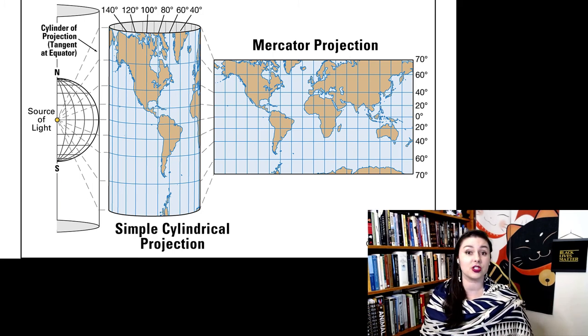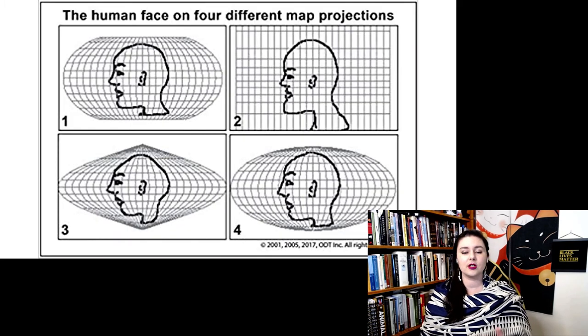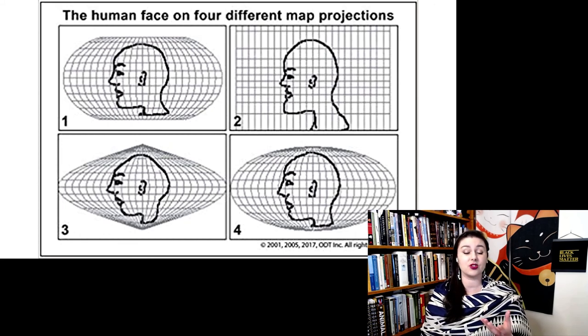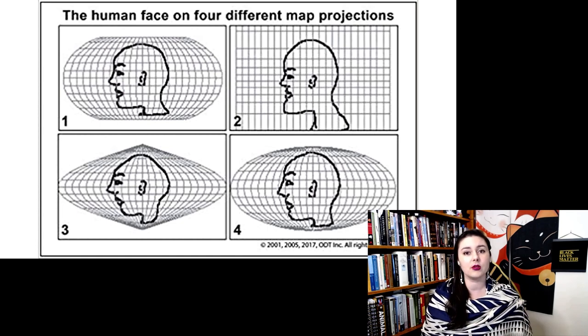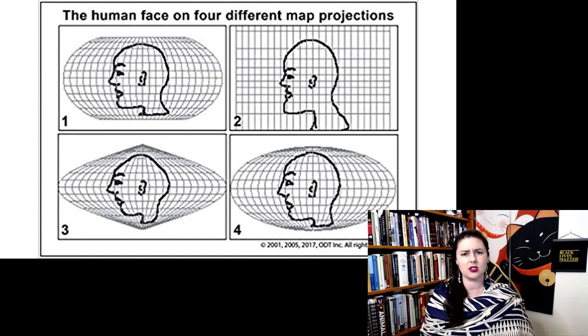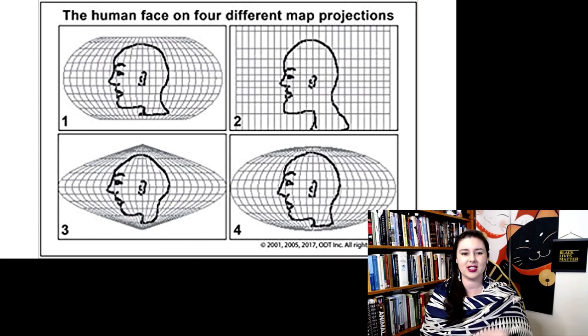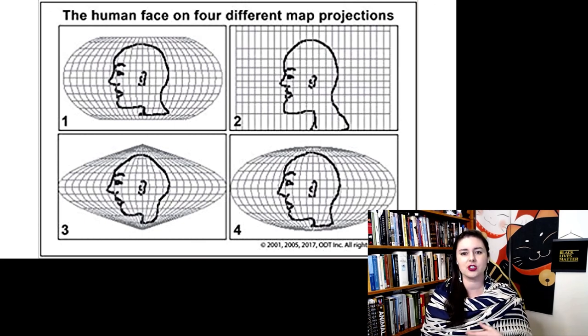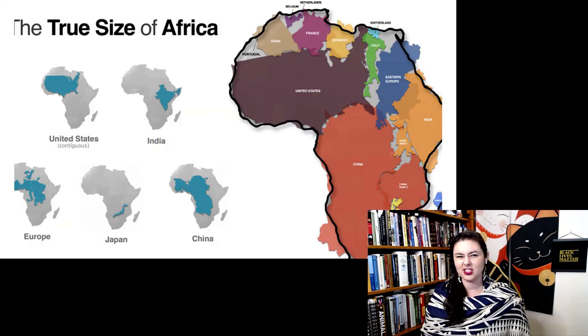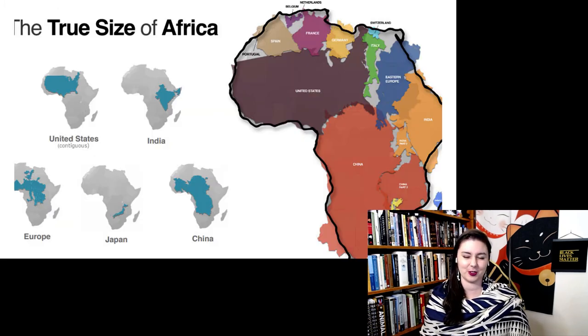So one way to compare this is to look at different map projections and how they distort a normal human face. And number two, the Mercator projection, you can see the chin and the forehead are much larger than they would normally be in a face. And everything in the middle is kind of squashed.